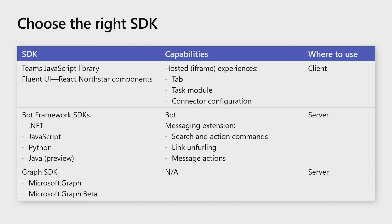If you were to generate the starter code for a bot or messaging extension, the toolkit will include the corresponding SDK for the Microsoft bot framework. This SDK is available in various languages. The .NET, JavaScript, and Python SDKs are ready for production release, while the Java SDK is in development and is currently in preview. We also have libraries that help you use Microsoft Graph. If you use this, note that there's a separate one for graph endpoints that are still in beta. When you're taking advantage of these APIs, remember to include the beta version of the SDK inside your application.